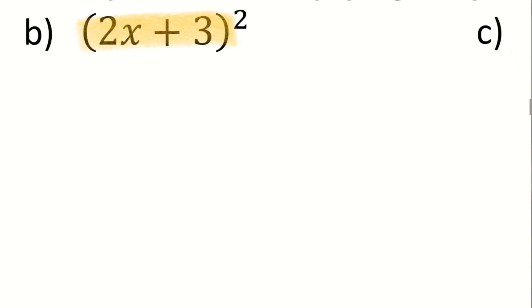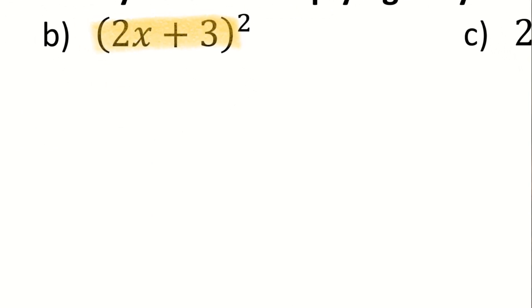So in B, again, the cautionary tale was all about this. Again, I'm multiplying a binomial times itself. I'm squaring it. So this is the same as 2x plus 3 times 2x plus 3.